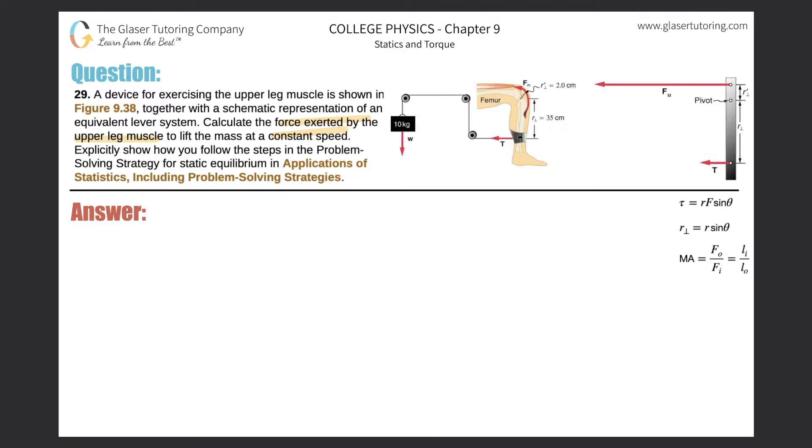It's acting on the tibial tuberosity and will produce a torque that rotates the lower leg upward. Here's a diagram: here's the rigid lever, the pivot point, the force of the muscles acting here, and the tension in the cable being produced by the weight of the object being lifted.